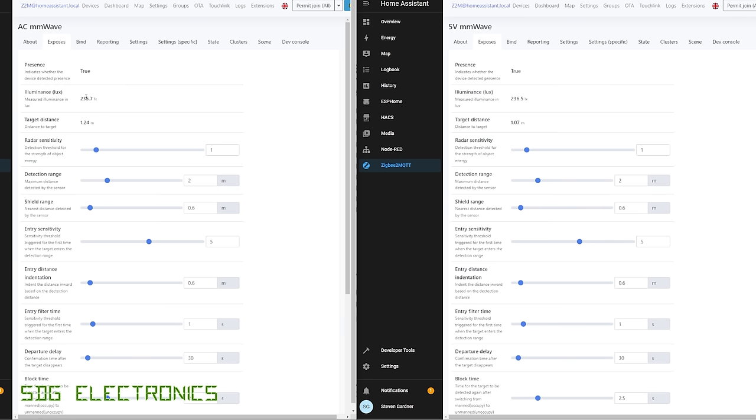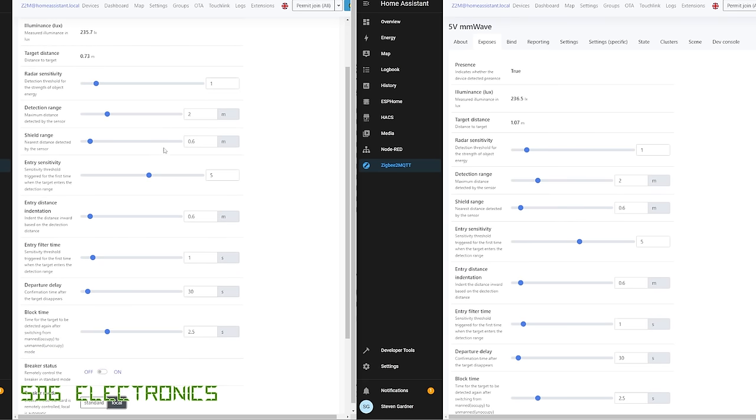You can see the two devices, they've got very similar light levels being reported. There are various settings - the detection range is going to be on a 2.5 or 6 meter ceiling. If I set it to 2 meters, it might not detect. There's also a shield range, so anything closer than 0.6 meters won't be picked up.